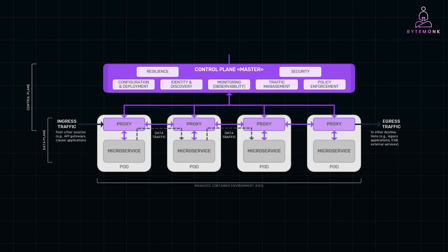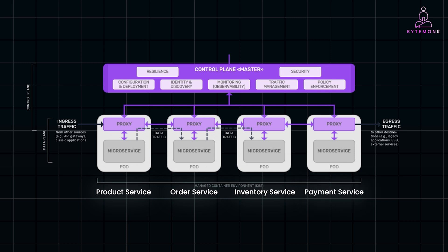So imagine you have an e-commerce application platform with several microservices: a product service that handles product details, an order service handling customer orders, an inventory service keeping track of the stock, and a payment service which processes transactions.